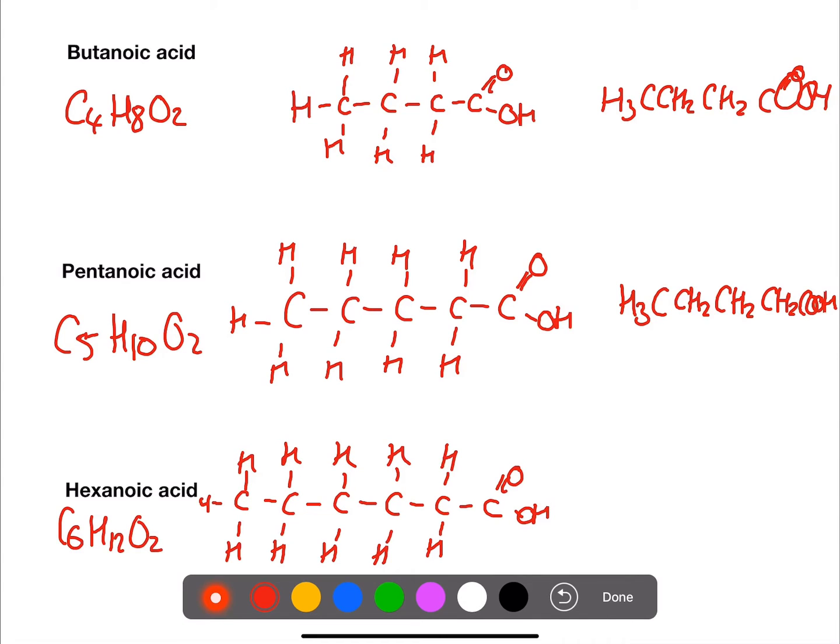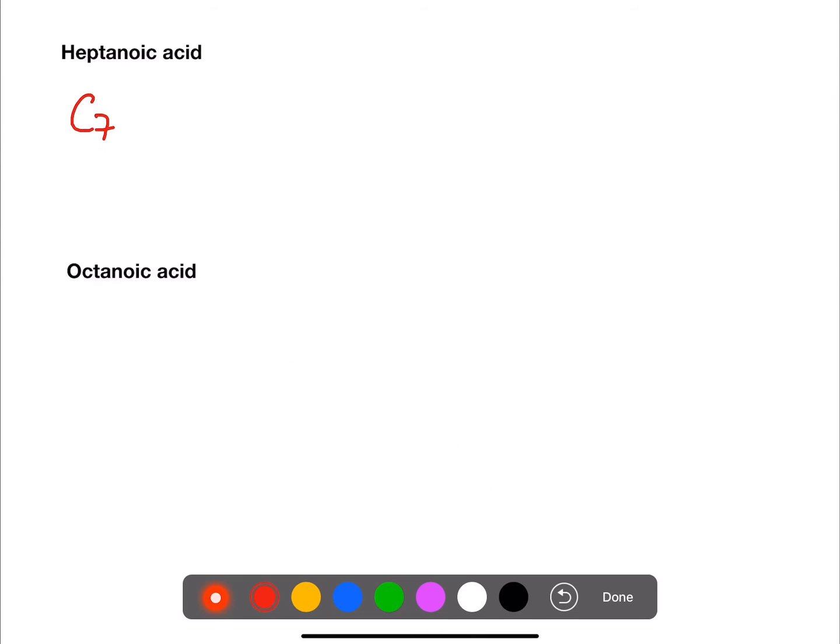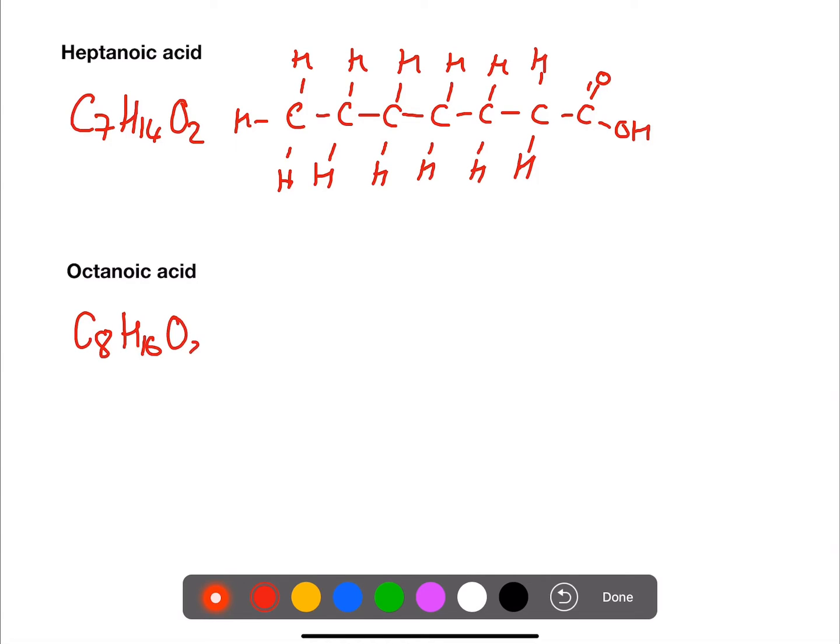So here we have butanoic, pentanoic and hexanoic acid. And then our final two, heptanoic, C7H14O2. And then finally octanoic acid, C8H16O2.